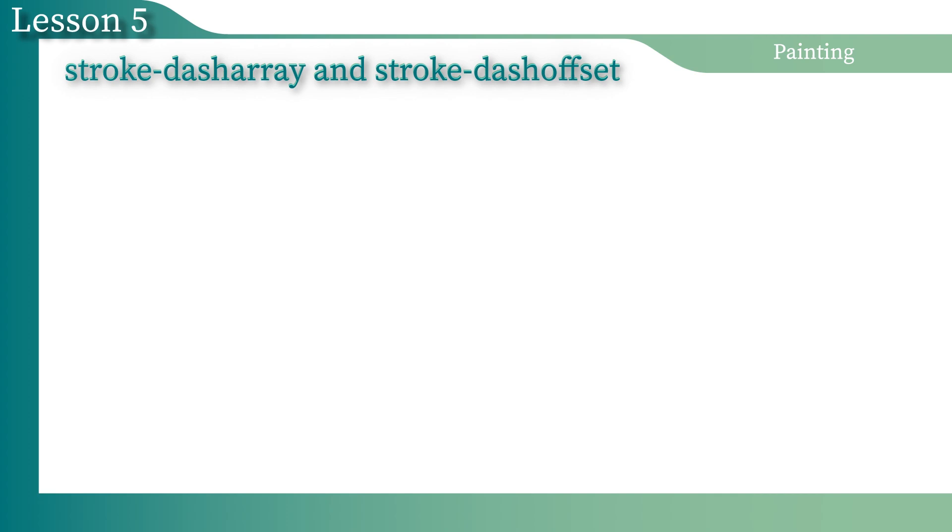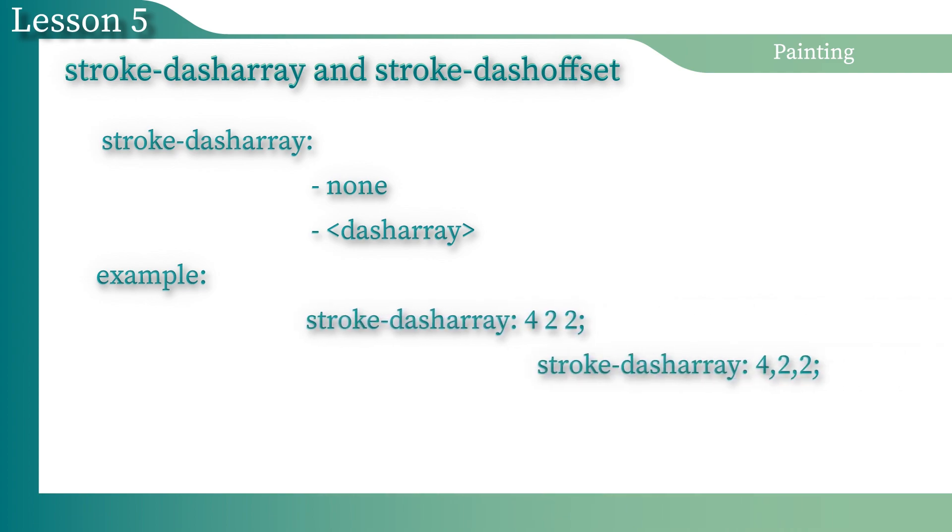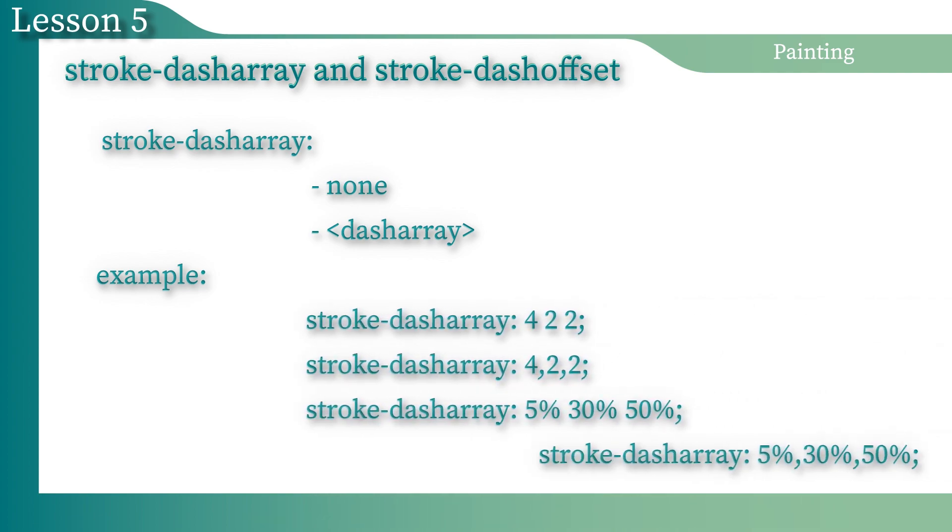The StrokeDashArray property creates a pattern of dashes and gaps that is used for stroke rendering. The StrokeDashArray property can take one of two values, such as None or DashArray. The None value means that dashes and gaps are not applied. The DashArray value specifies the pattern of dashes and gaps. The DashArray is a list of parameters that are separated by spaces, commas, or spaces and commas.